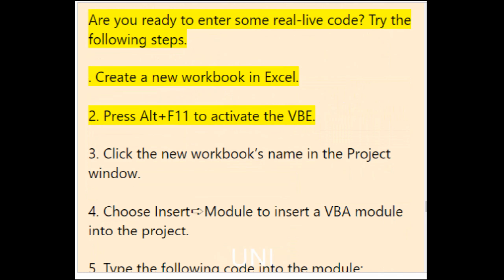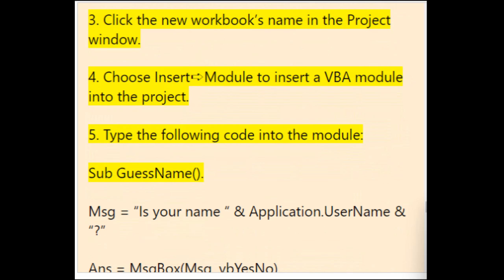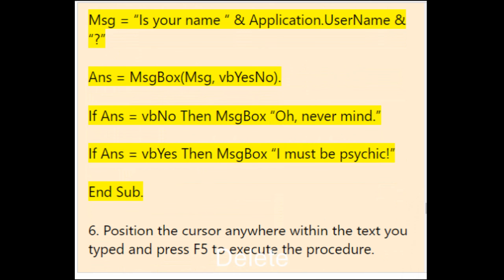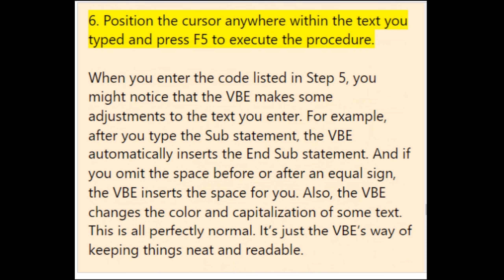Ready to enter some real code? Try these steps: create a new workbook in Excel, press Alt+F11 to activate the VBE, click the new workbook's name in the Project window, choose Insert > Module to insert a VBA module. Then type the following code: Sub GuessName / Message = "Is your name " & Application.UserName & "?" / Ans = MsgBox(Message, vbYesNo) / If Ans = vbNo Then MsgBox "Oh, never mind." / If Ans = vbYes Then MsgBox "I must be psychic!" / End Sub. Press F5 to execute the procedure.